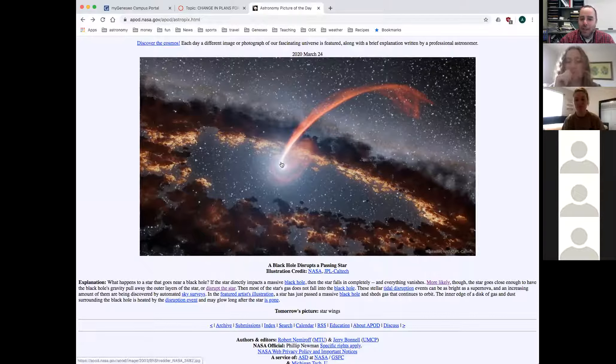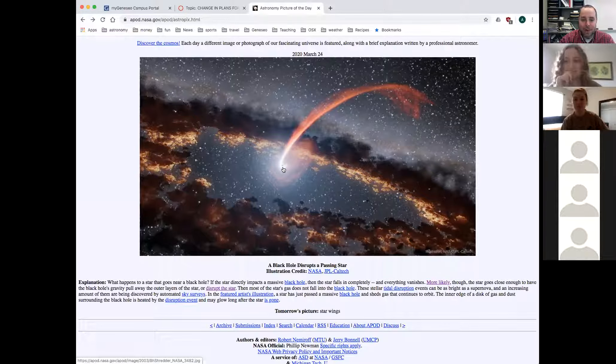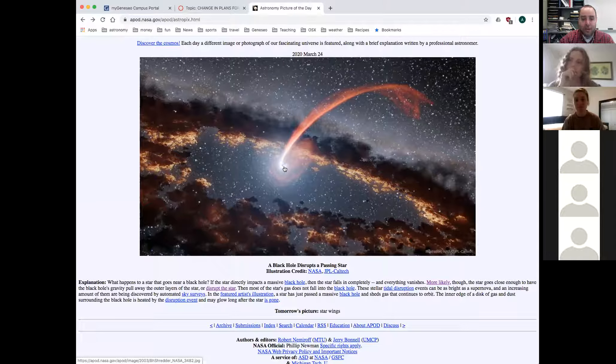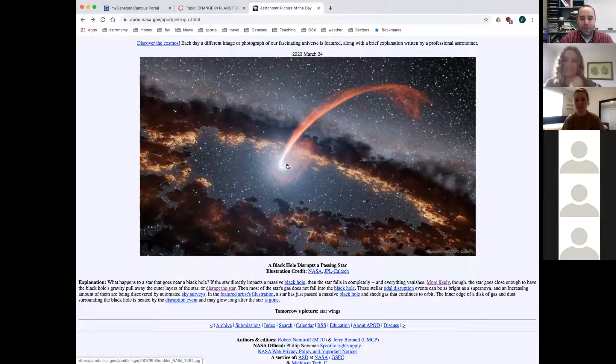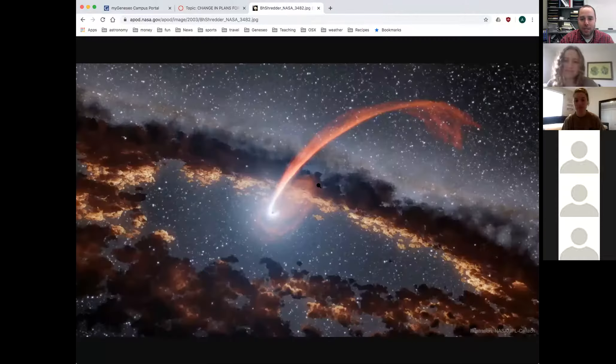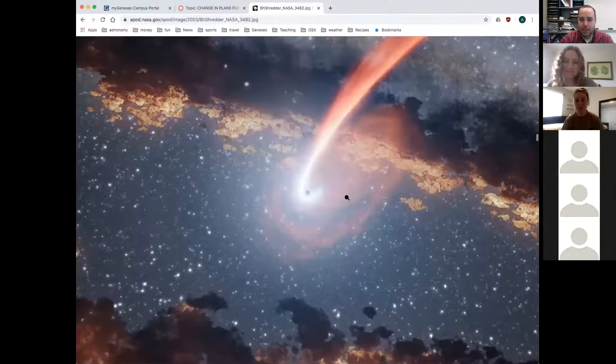But what are they? They're giant, massive, very small objects in space. They're so massive that they can disrupt things that are around them. It's not like things just, black holes don't suck things in. But if things get too close, the gravity is so strong that it can disrupt those things. Here is an artist's depiction of a black hole, that's the dot in the center, disrupting a star.